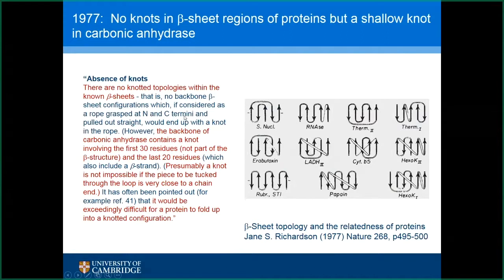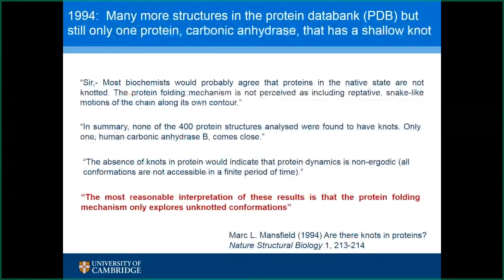Richardson goes on to note that the backbone of carbonic anhydrase does contain a knot, but it's not part of the beta sheet. She also notes that presumably a knot is not impossible if the piece to be tucked through the loop is very close to the chain end. She refers to the earlier paper: it would be exceedingly difficult for a protein to fold up into a knotted configuration. Again, totally not controversial at all.